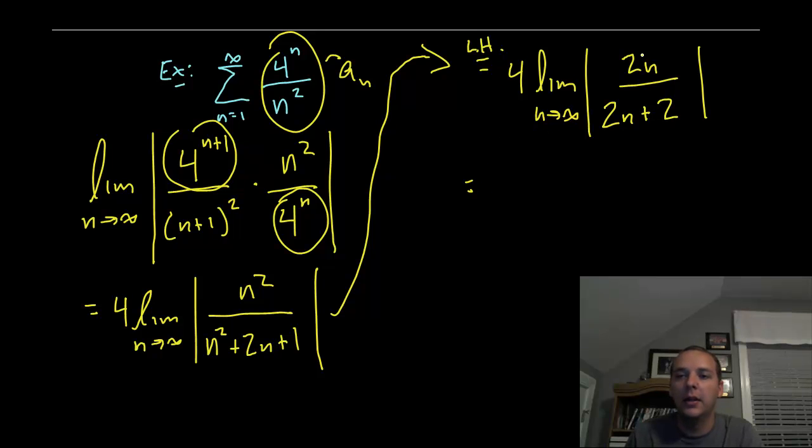So 4 times the limit n approaches infinity. And L'Hopital's rule says when you get 0 over 0 or infinity over infinity, you can differentiate the top and you can differentiate the denominator and repeat the limit. Now again, you're going to get infinity over infinity. I'm going to skip the next step. If you did L'Hopital's rule again, which you should probably do on your own paper, you can kind of see you would get 2 over 2 if you took another derivative, which would give you 1. Now that's greater than 1 because you have to multiply by the 4. So since that product is greater than 1, then this diverges by the ratio test.